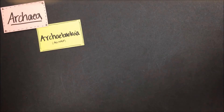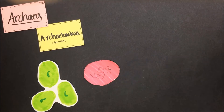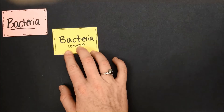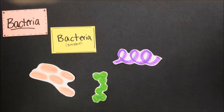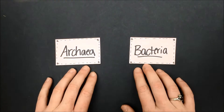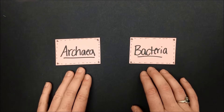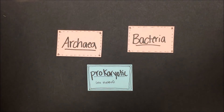The kingdom archaea, or archaebacteria, is in the domain archaea and is believed to contain some of the oldest species of life on Earth. Archaea live in very extreme environments such as very salty water or deep in ocean trenches. Another very old kingdom of life is bacteria, in the domain bacteria. Bacteria get a bad reputation for causing disease, though many are very helpful — in fact, you have about four pounds of bacteria in and on your body helping out your immune system. Organisms in the domains archaea and bacteria are prokaryotic, meaning they lack a nucleus and membrane-bound organelles.